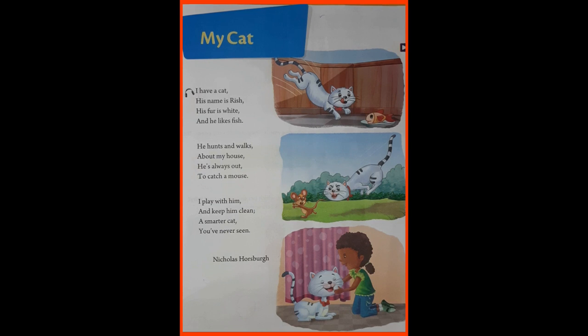Rish likes fish. He hunts mouse and walks into the house. He is always chasing and catching mouse. The girl says she plays with her cat and keeps the cat clean. She also says Rish is a smarter cat, which no one can see another cat like Rish.